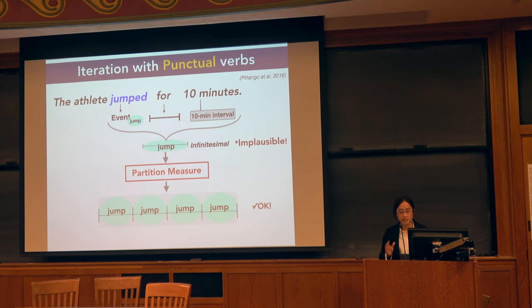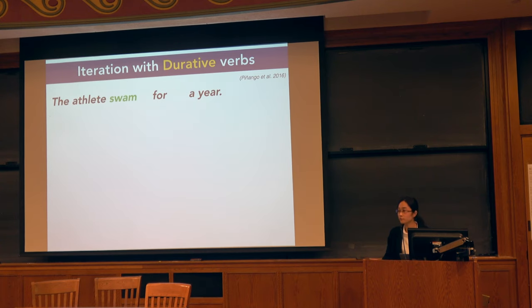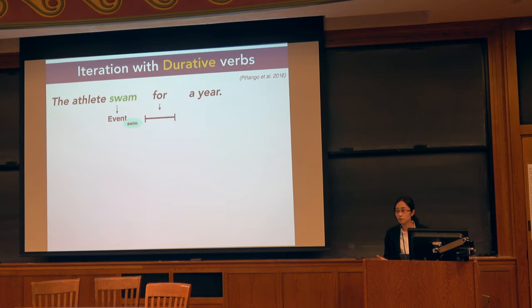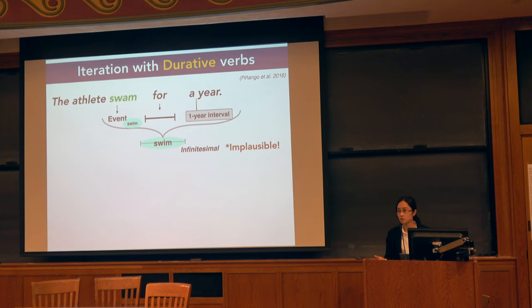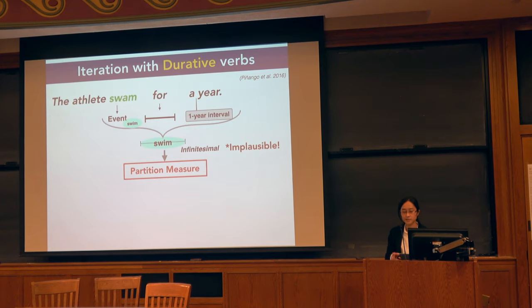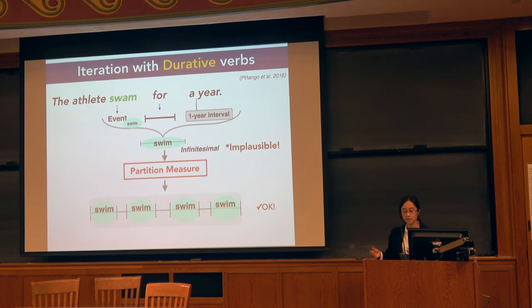The same process applies to sentences with a durative verb: 'the athlete swam for a year.' Upon encountering the verb, the processor retrieves the swimming event representation. 'For' introduces a one-year interval. The processor builds an infinitesimal partition measure by default — one swimming event lasting a year — which turns out implausible. Then the processor builds a non-infinitesimal partition measure, segmenting the one-year interval into several sub-events with multiple swimming events. So the same process applies for sentences with both durative and punctual verbs.